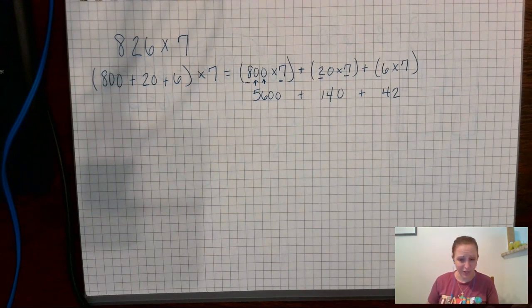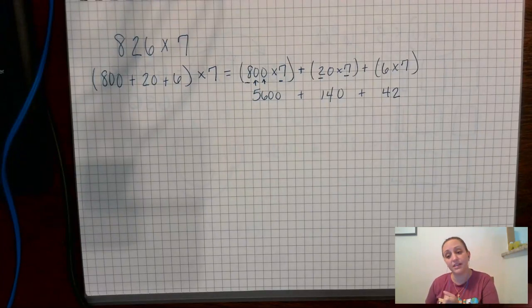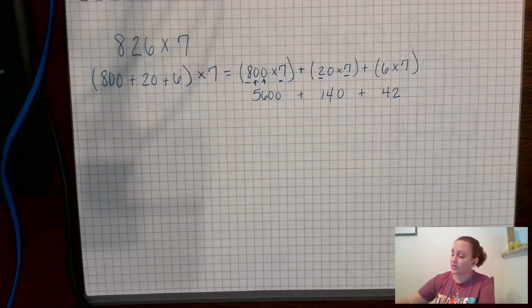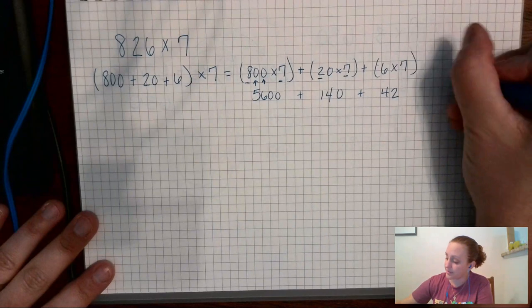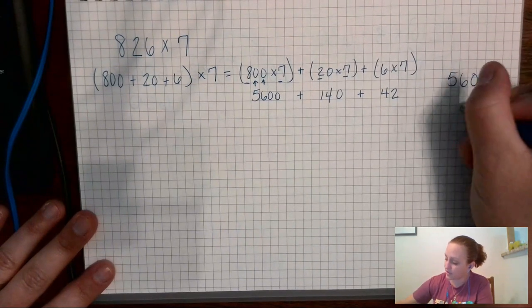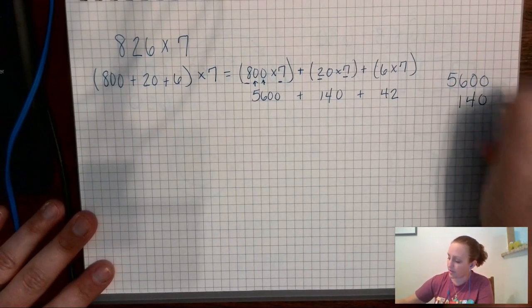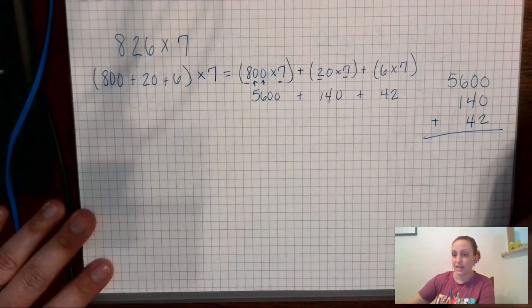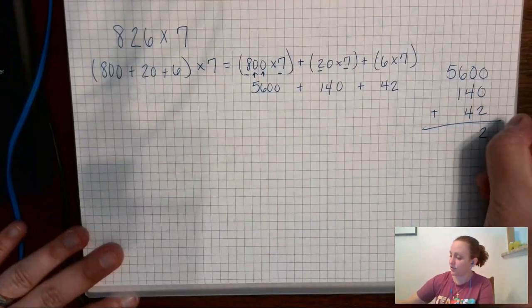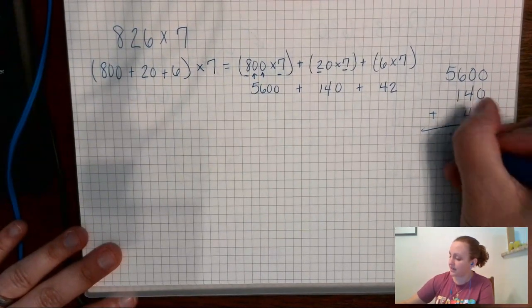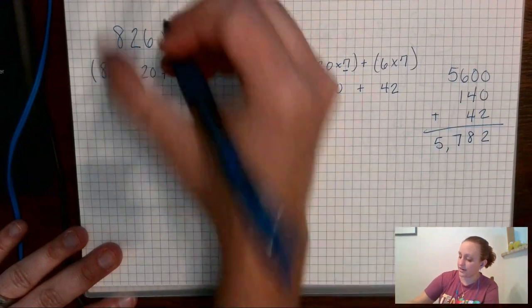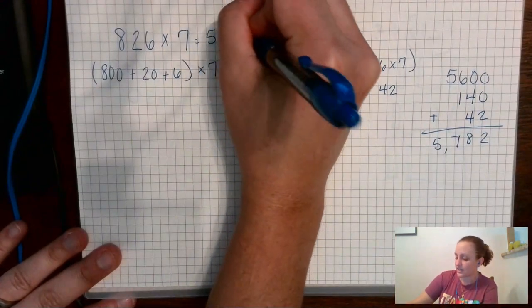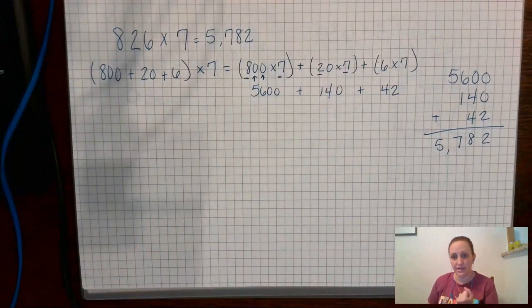Knowing those multiplication facts quickly and accurately is really, really going to help you with everything we're doing in fourth grade and beyond. So now I'm going to line these up to add them correctly, making sure I line up my place value right. Four plus four is eight, six plus one is seven, and five — so I got 5,782.